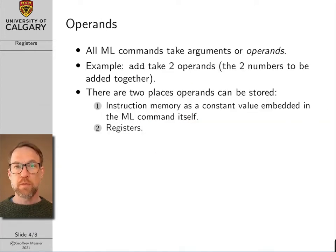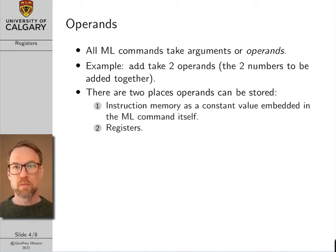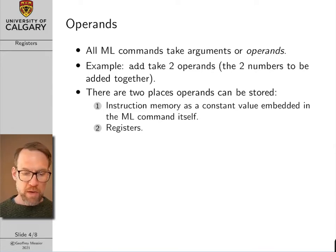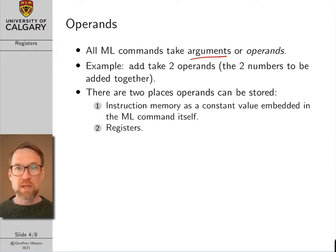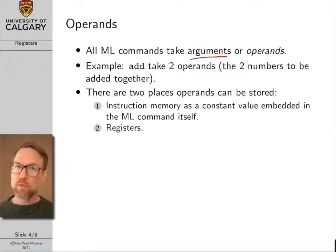One of the big uses for the register file is for operands for our machine language instructions. Operands are basically the arguments of a machine language instruction. For example, if we want to perform an addition operation we need to know where to get the two numbers we're going to add together — those two numbers are referred to as the operands.